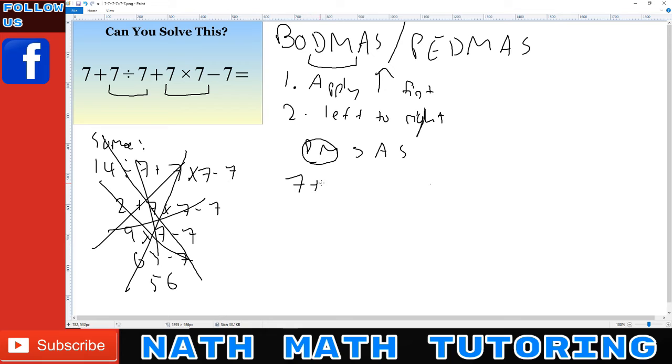So then that would become 7 plus 1, because 7 divided by 7 is 1, and then 7 times 7 is 49, then minus 7. So you see the first thing you want to do is apply the order that is first, in this case BODMAS. So then that's where we got 1 and 49. You just go left to right normally because plus, plus, minus. So 7 plus 1 is 8 plus 49 is 57 minus 7 is 50. And that is the correct answer.